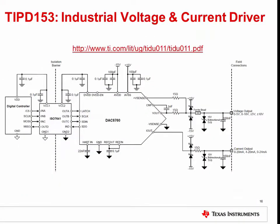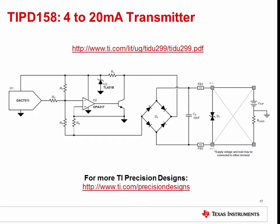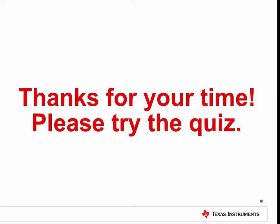We offer several TI precision designs which include extra protection components to ensure robustness against the harmful transients discussed in this video. For these designs, engineering evaluation EMC tests are performed, and the results are given in the appendix of the design document. Component selection and the reasoning behind the overall protection scheme are also provided. One excellent example is TIPD153, an isolated single channel industrial voltage and current output driver. Another great example is TIPD158, a low cost loop powered 4 to 20 milliamp transmitter. That concludes this video. Thank you for watching. Please try the quiz to check your understanding of this video's content.